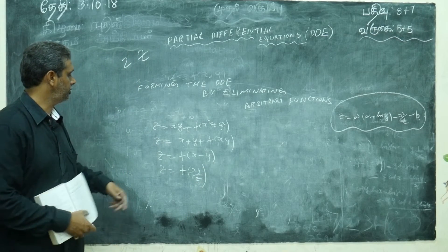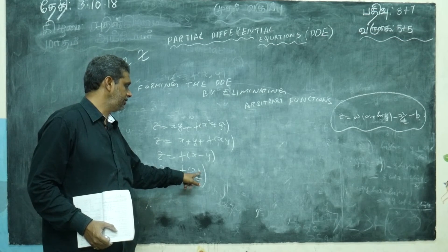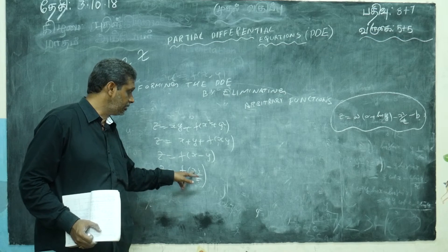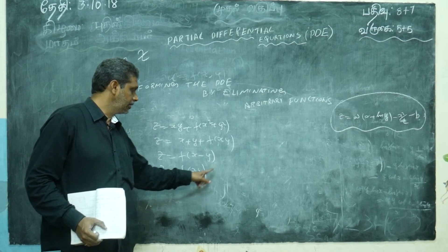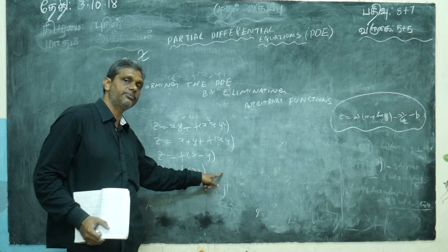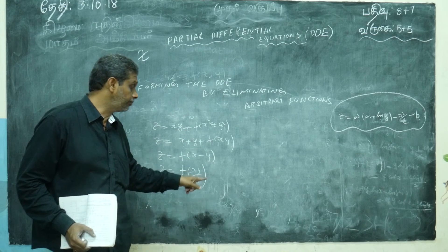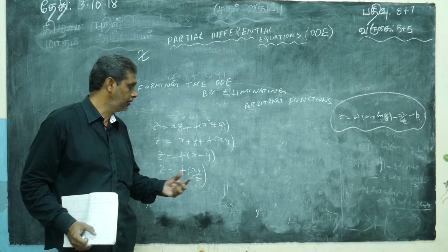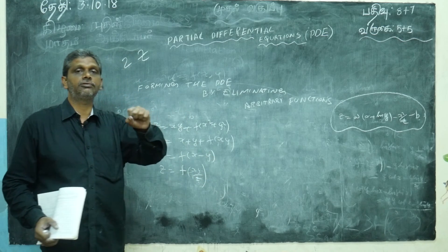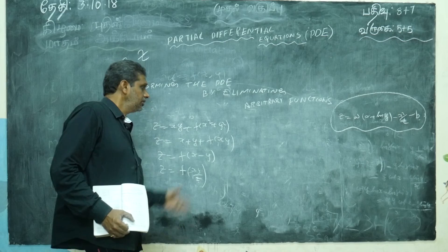Another solid question: z = f(x/z). With respect to x: y is constant but x/z requires the u/v quotient rule. Differentiate with respect to x: write f'(x/z), then open the bracket — take the denominator z squared, differentiation of numerator minus numerator times differentiation of denominator. Differentiating z with respect to x gives p; don't forget that. Similarly with respect to y gives q. Remove f', then you get p times something equals q times something — job is over.